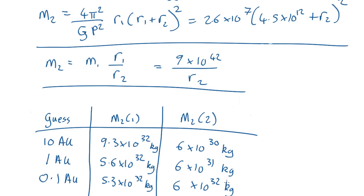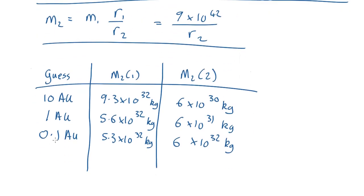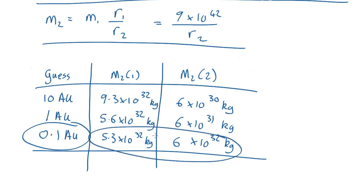So we're very close here, we could keep on refining it, maybe try 0.11 or 0.09 or something like that, but this is close enough for current purposes. It looks like that's about what r2 is and these two values here are about what the mass of the mysterious object is.